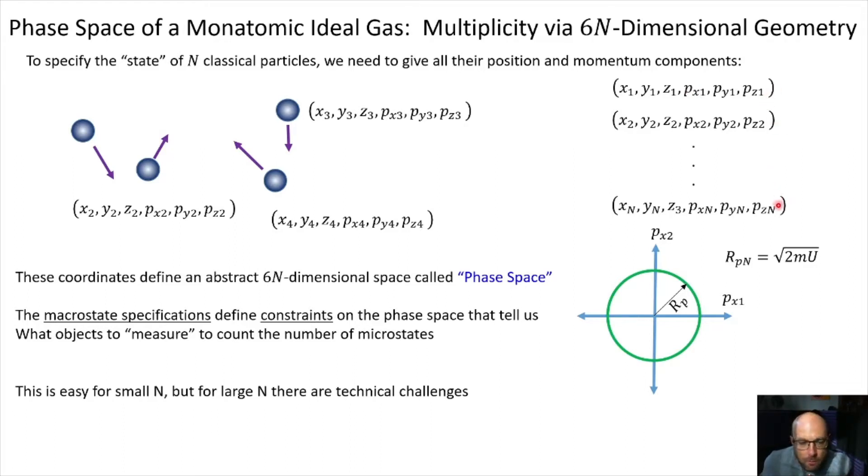And so you can't deal with these just by listing them. And so it helps to define an abstract 6n dimensional space, which we call the phase space of the ideal gas, where each number in one of these six tuples is associated to a coordinate axis. And so phase space is a very high dimensional space. And the important thing is that if you have a gas where you've identified macro state specifications, you constrain the region of phase space where these coordinates can lie.